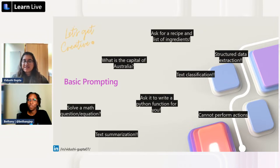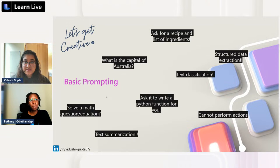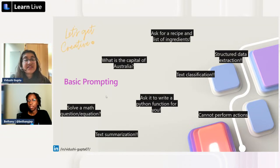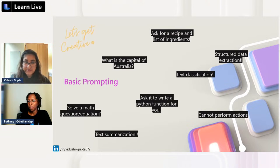Here's how you can start with basic prompting: ask it facts like 'what's the capital of Australia,' solve a math equation, summarize a blog post, write a Python function, classify text for sentiment analysis, or ask for recipes and a corresponding shopping list. Keep in mind it cannot perform actions — you can't give it a URL and ask it to open the page, but if you paste the web page content you can ask it to summarize that text.